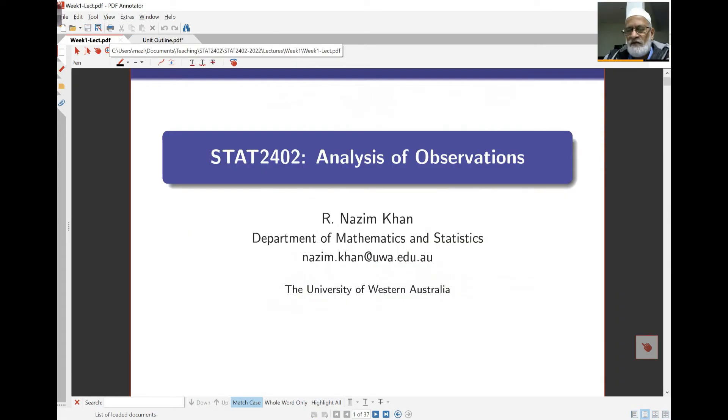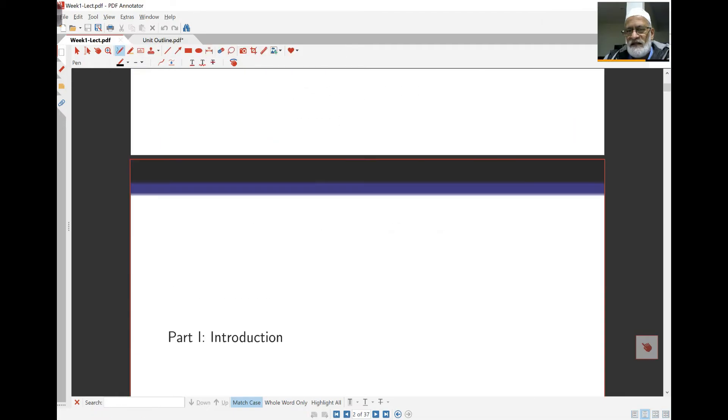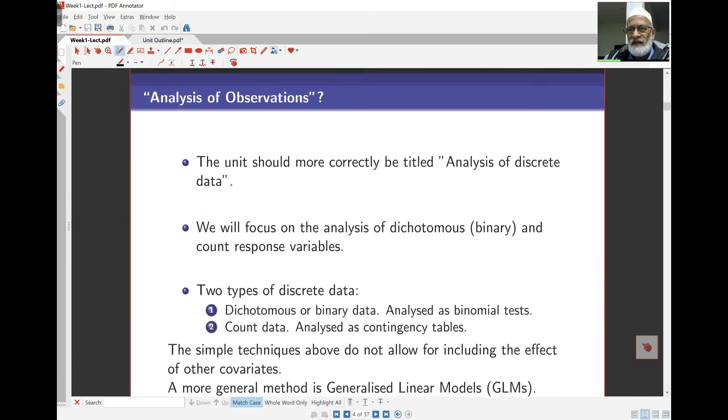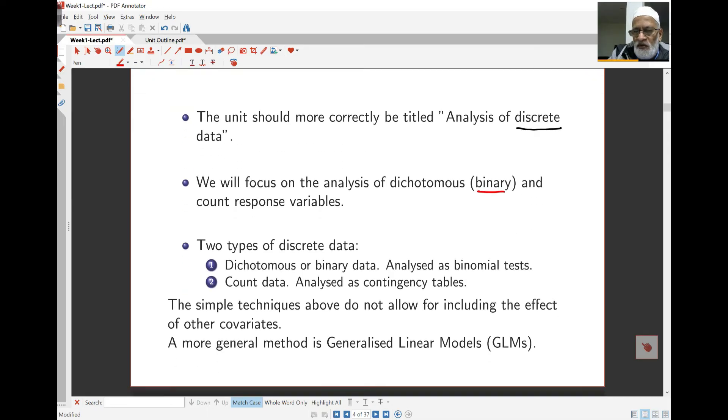Now let's get to the lectures. So this is analysis of observations. Essentially that's not a nice title. It's not a very descriptive title. What it should really be is about discrete data. So we're looking here at what we call discrete data. We're looking at data that is not continuous but may be dichotomous, binary for example. Zero or one, yes or no, true or false. And we're also looking at what we call count data. The number of occurrences of something. The number of cars queued up for example at a traffic light. The number of errors in a piece of work like a document of this kind.